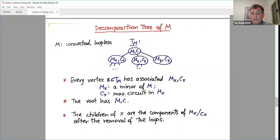So what we do, we consider the following decomposition tree of M. Without loss of generality, we are interested only in connected and loopless M's. And the decomposition tree looks like this. Every node of this tree, every X there has associated matroid M_X and a maximal circuit in it. The root has the original M and the maximal circuit there. Now the children of X are the components of the contracted matroid. And moreover, when we contract M with respect to C_X, some loops are created and are thrown away.